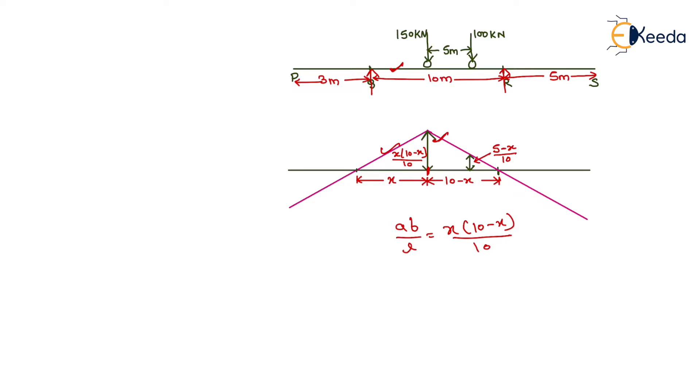For the determination of maximum sagging moment, we place the maximum load on this ordinate. The maximum load is 150 kN. If we place the 150 kN load on this ordinate, then the 100 kN load will be acting at a distance of 5 meters from the 150 kN load.